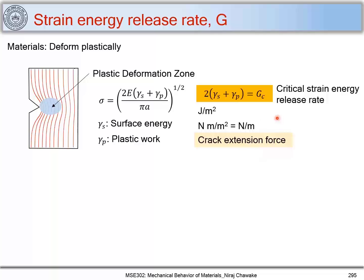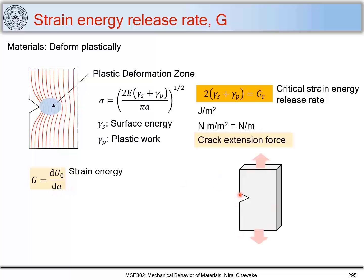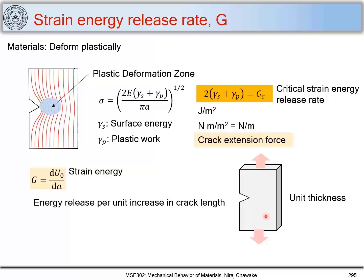You will find these two terms in the literature: strain energy release rate or crack extension force, which is G_C = 2·gamma_S + gamma_P. G can be found by taking the derivative of U₀ (strain energy) with respect to A (crack extension). When this crack extends, there is a change in strain energy, and that strain energy change with respect to crack extension is G. For unit thickness materials, this is the energy release per unit increase in crack length.